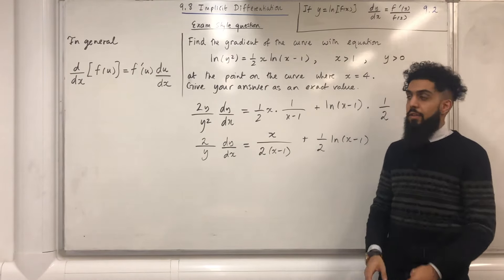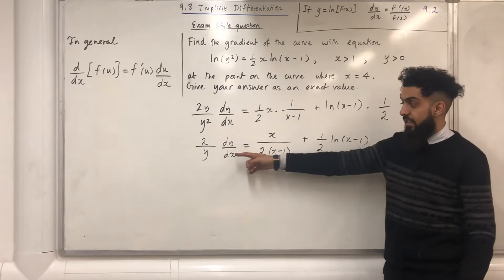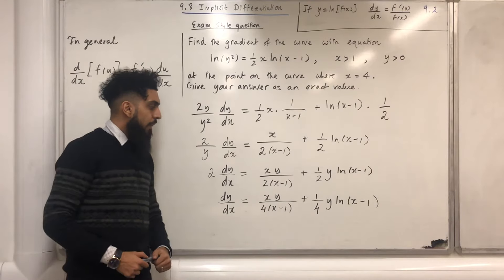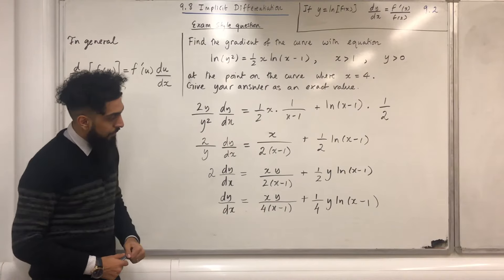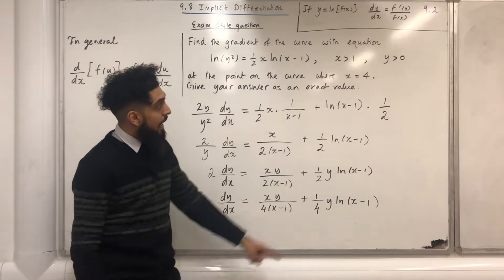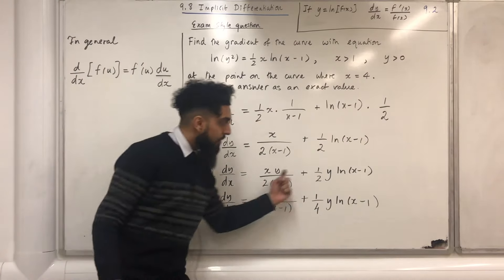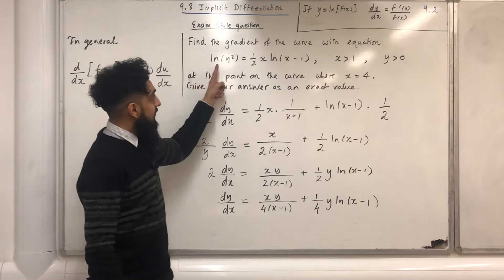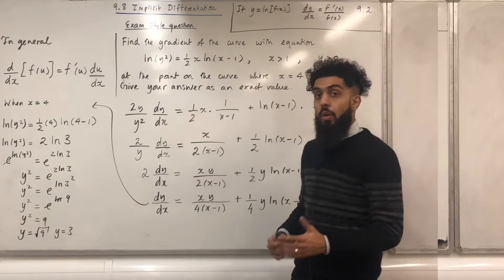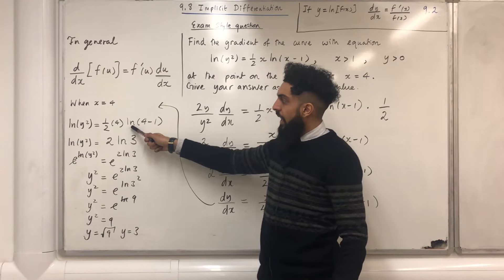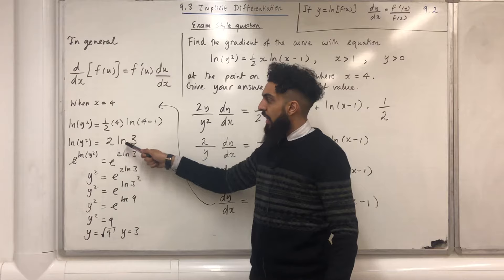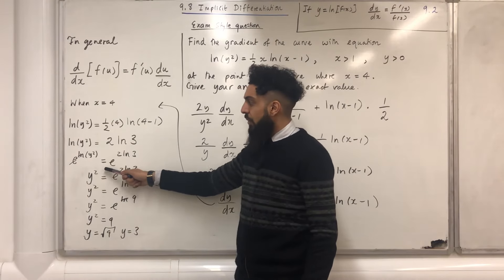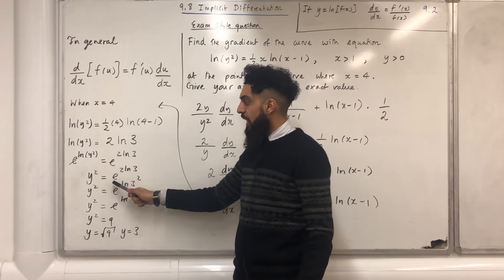I am after the gradient at the point where x equals 4, so I need to make dy over dx the subject. After making dy over dx the subject, I get xy over 4(x minus 1) plus one quarter y ln(x minus 1). Since dy over dx is in terms of x and y, I need to find the y value when x equals 4. Substituting x equals 4 into the original equation: ln y squared equals 2 ln 3, so applying e to both sides gives y squared equals e to the power 2 ln 3.